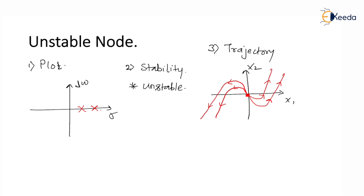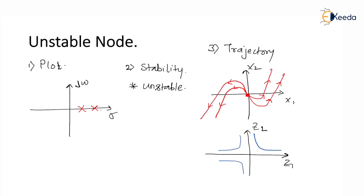Now suppose if we use another axis — z1 and z2 — which are derived from the x1-x2 plane itself. In the z1-z2 plane, the trajectories are also going to diverge away from the origin. As we can clearly see, all the trajectories are diverging away from the origin.